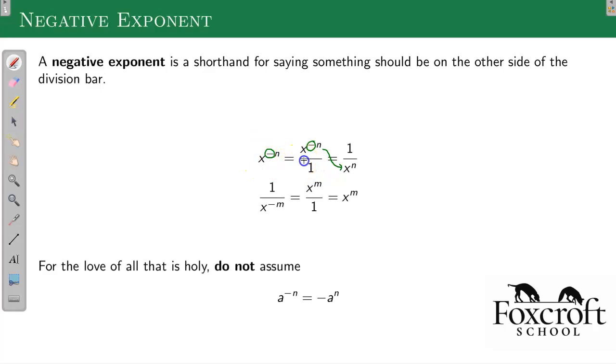In this case, I had to make the division bar, but I can always do that by making it over 1. In this case, the negative exponent is already on the bottom of the division bar, so I can move it to the top and it becomes positive. So just remember, negative exponents are a shorthand notation for saying this thing should be on the other side of the division bar.